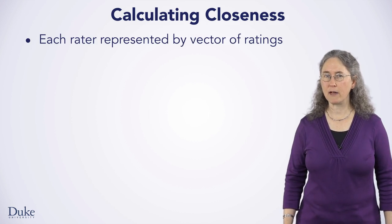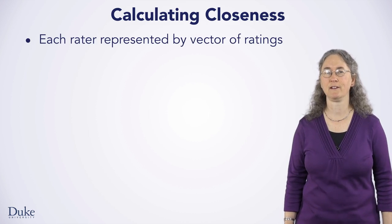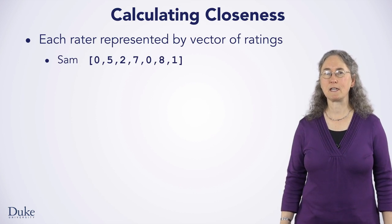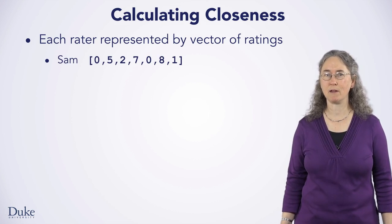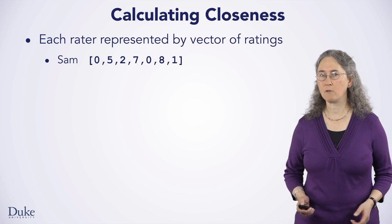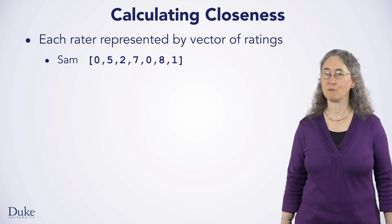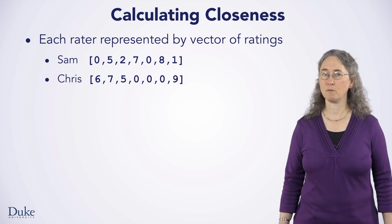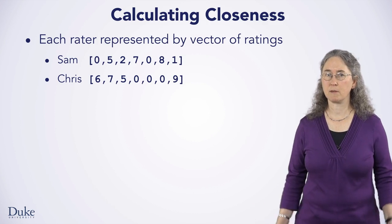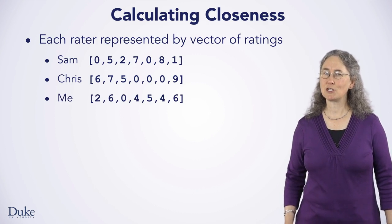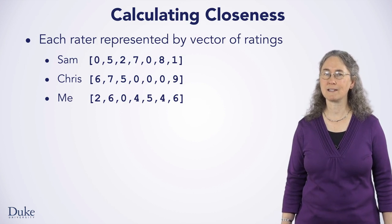We'll represent each rater by a vector of ratings to discuss how to calculate closeness. The vector is conceptually just a list of ratings for each movie. For example, here are 7 ratings by a rater named Sam. To help with this explanation, we're including movies that are not rated by Sam — these are represented by zeros. In the programs you write, ratings are stored only for those movies actually rated by Sam. Chris is shown with 7 ratings, although Chris has only rated 4 of the movies, with non-rated movies represented by zeros. My 7-element vector shows I rated 6 movies.